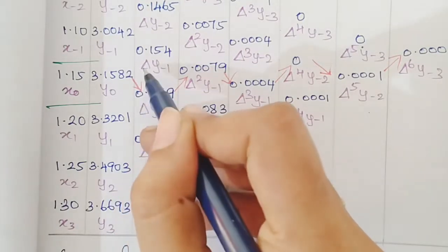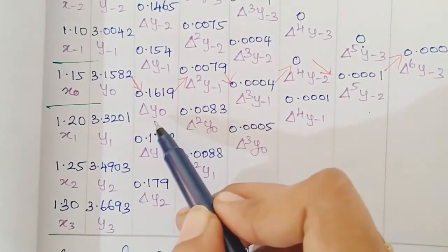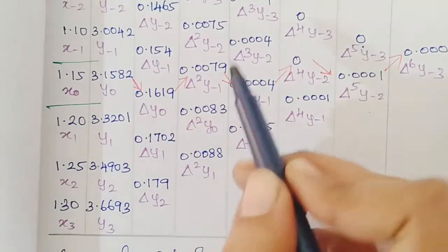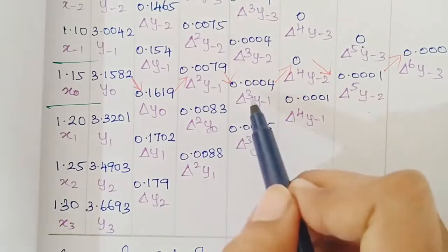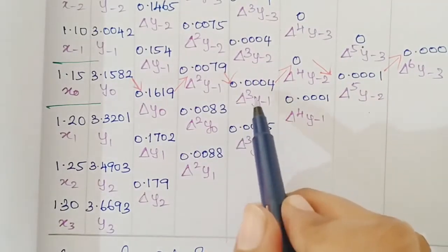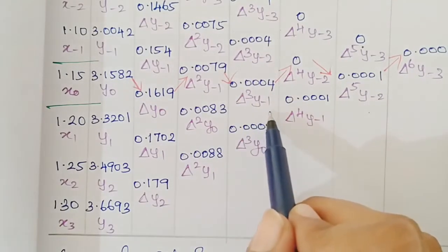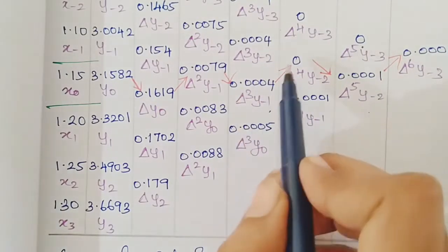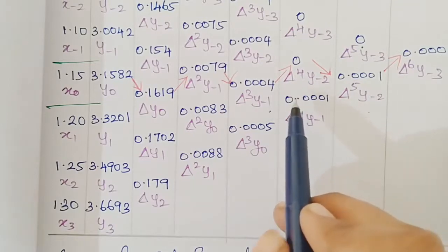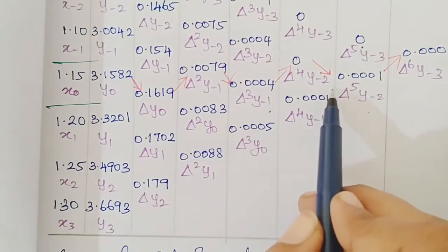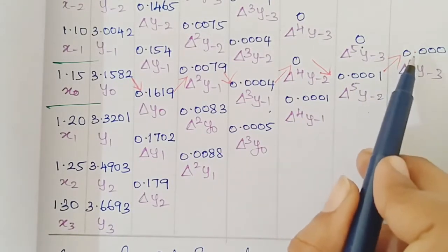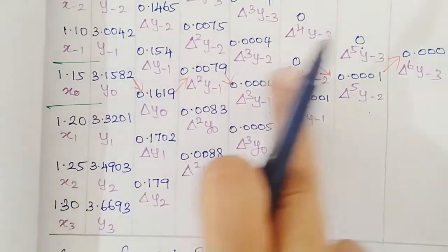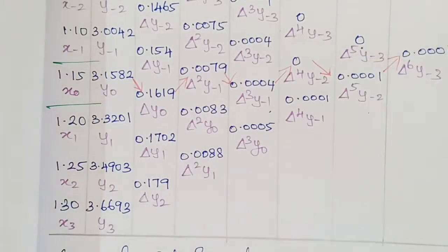For Gauss Forward formula, we use values along a specific diagonal starting from y₀. The required values are: δy₀, δ²y₋₁, δ³y₋₁, δ⁴y₋₂, δ⁵y₋₂, and δ⁶y₋₃. These are now substituted into the formula.